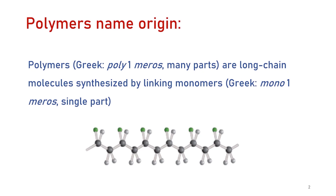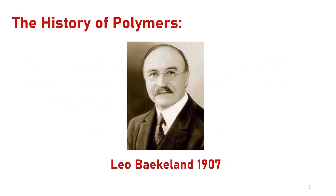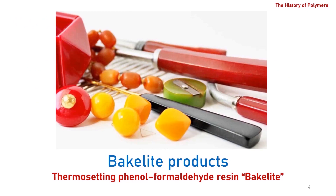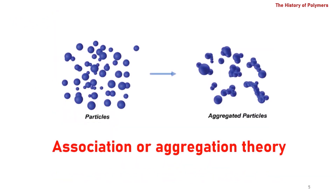The word monomers comes from the Greek word monomeros, meaning one single part. The first synthetic polymer was introduced by Leo Baekeland in 1907. He was able to synthesize a thermosetting phenol formaldehyde resin called Bakelite.